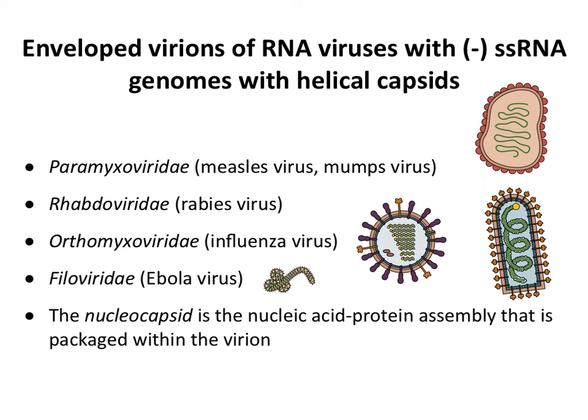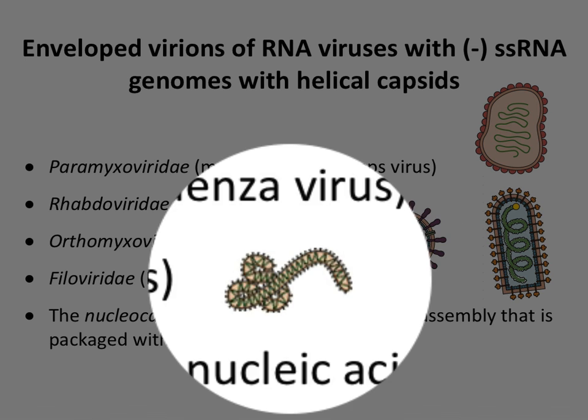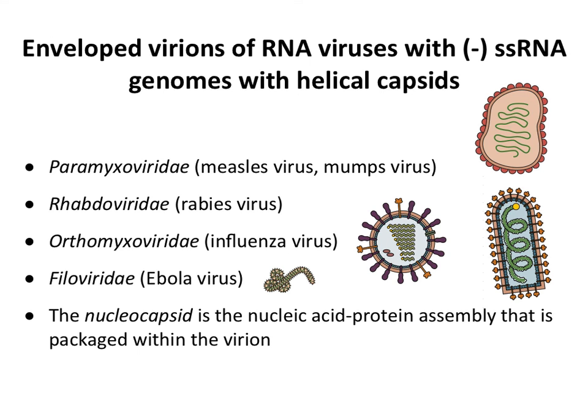Examples of animal viruses with helical nucleocapsids include measles, rabies, influenza, and Ebola virus. All of their genomes are arranged as a nucleocapsid with helical symmetry, packaged within an enveloped virus particle. As noted, none of the animal viruses with helical symmetry have naked helical genomes — they all have an envelope around them.